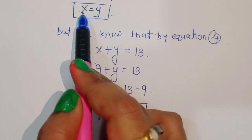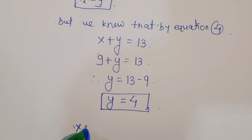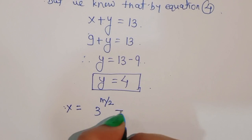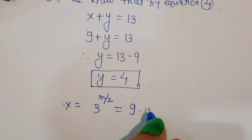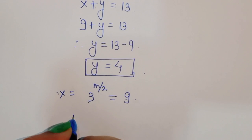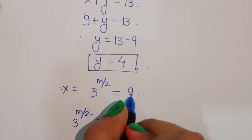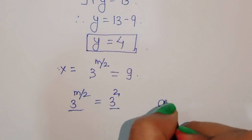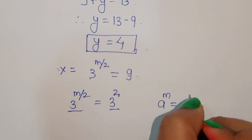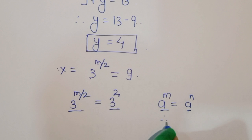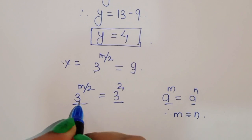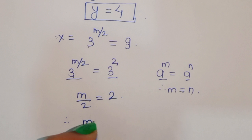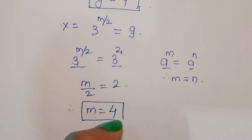But we considered that x is equal to 3 power (m by 2) — that is equation 1 — and we got the value of x as 9. So comparing: 3 power (m by 2) is equal to 9, which we can write as 3 squared. The bases are the same here. We know the formula: if a power m equals a power n, then since the base is the same, m equals n. Therefore m by 2 is equal to 2, so m is equal to 2 times 2, that is 4. This is the value of m.